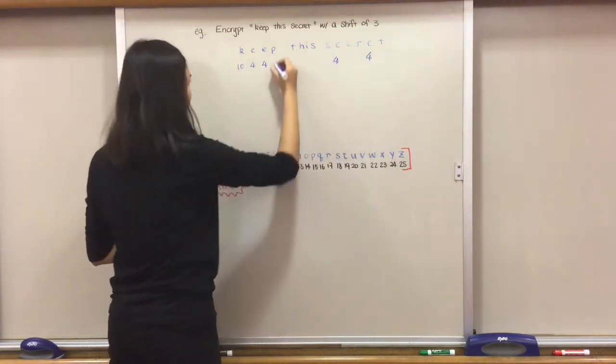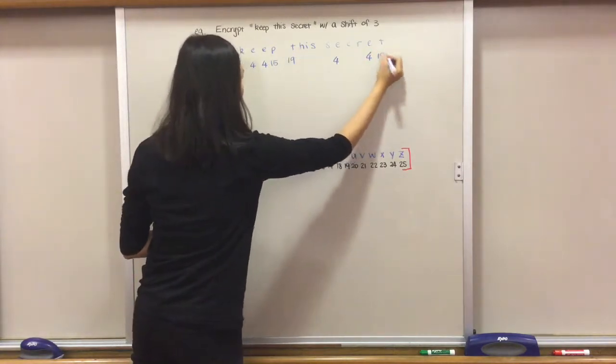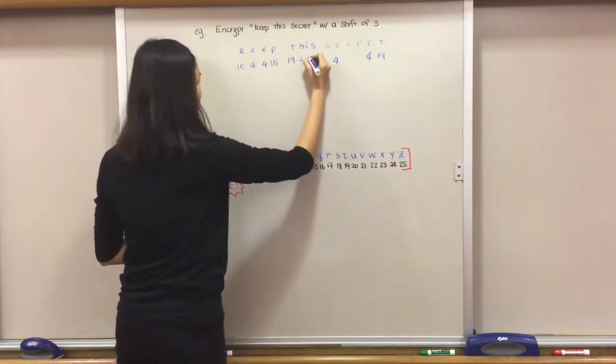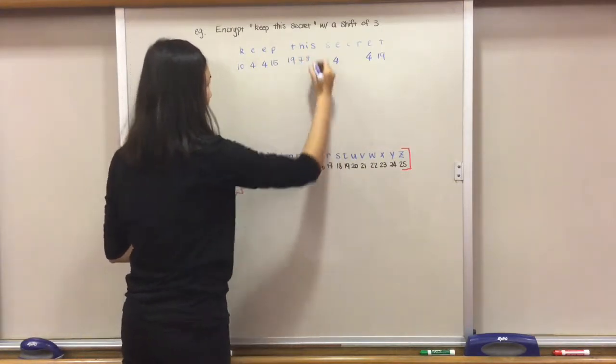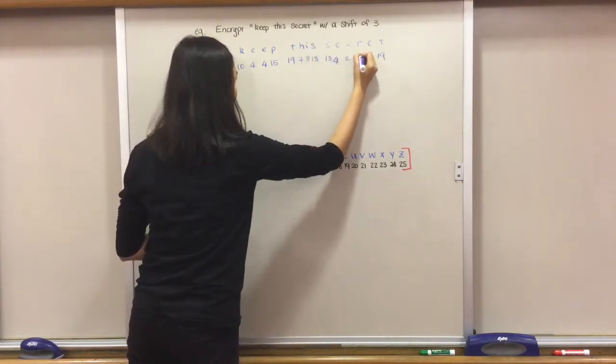P is 15, T is 19, H is 7, I is 8, S is 18, C is 2, R is 17.